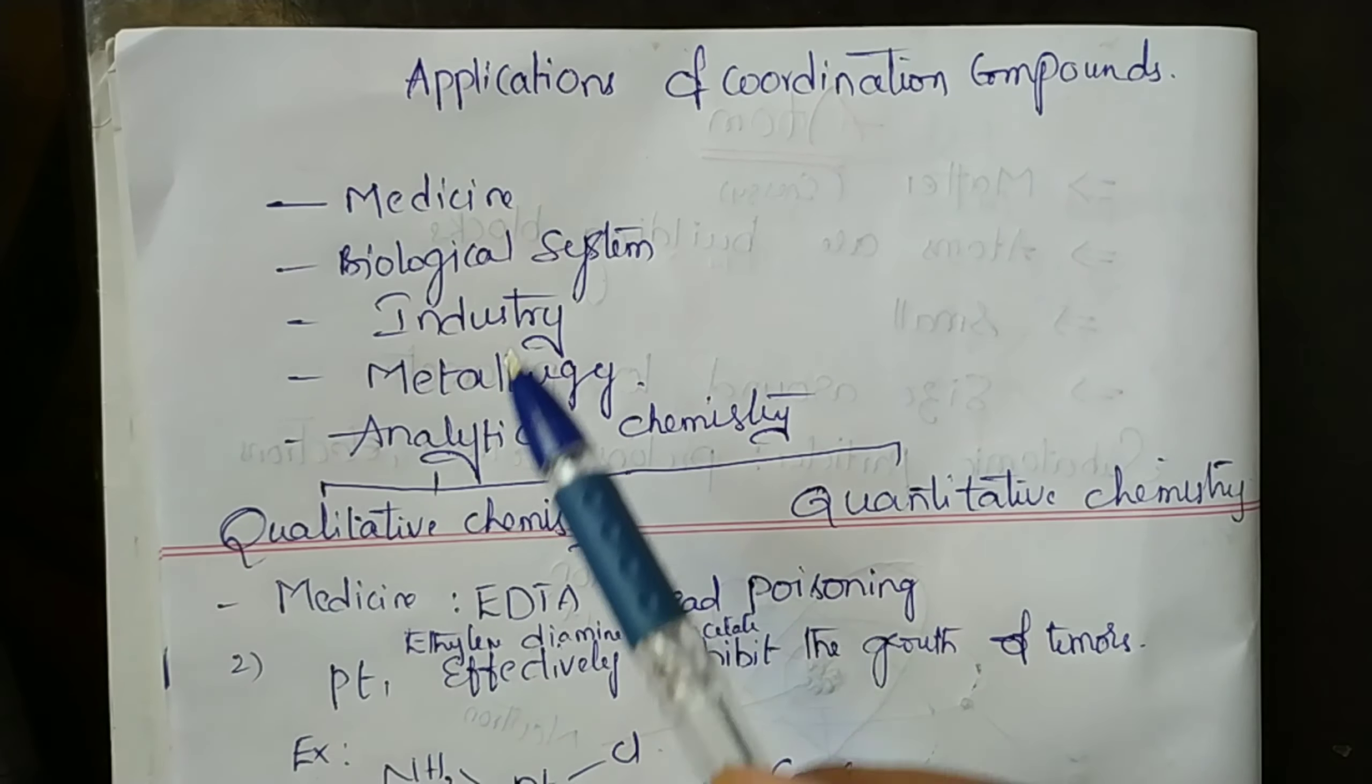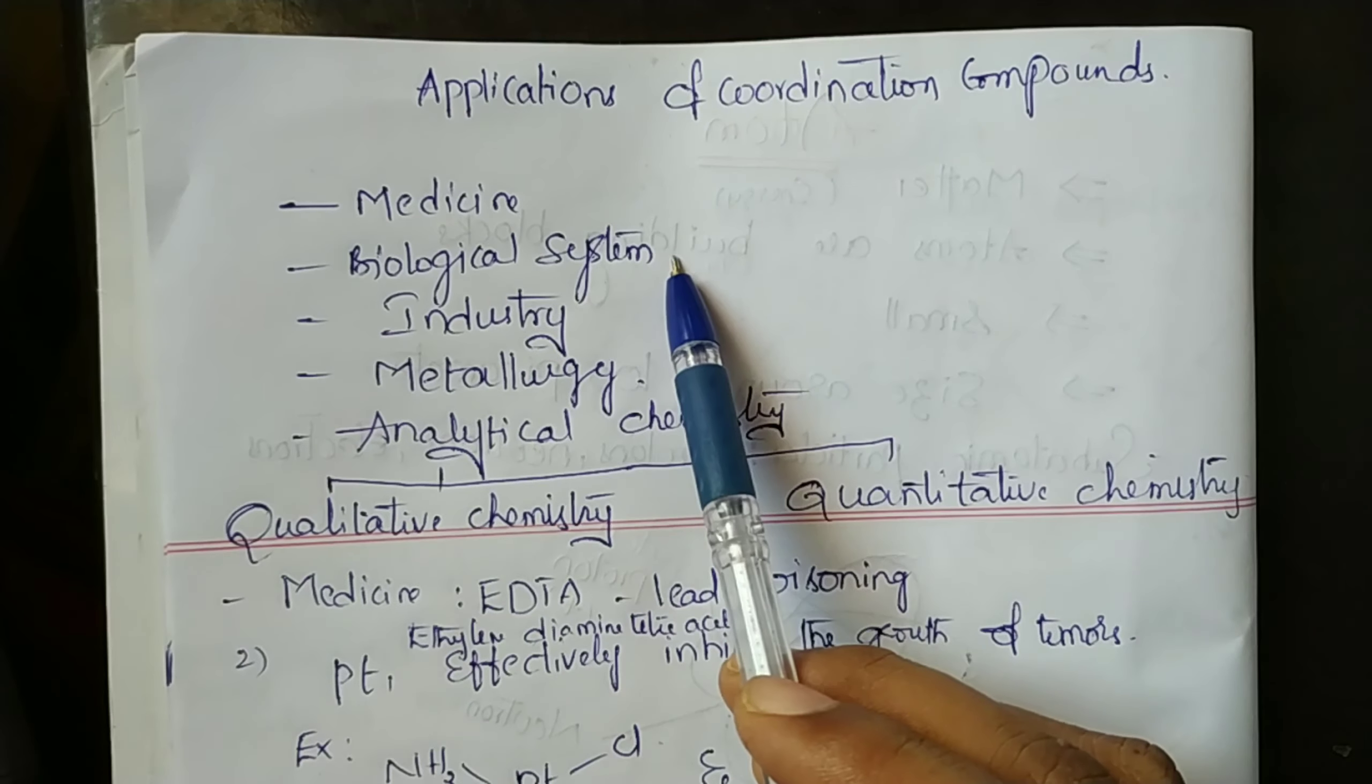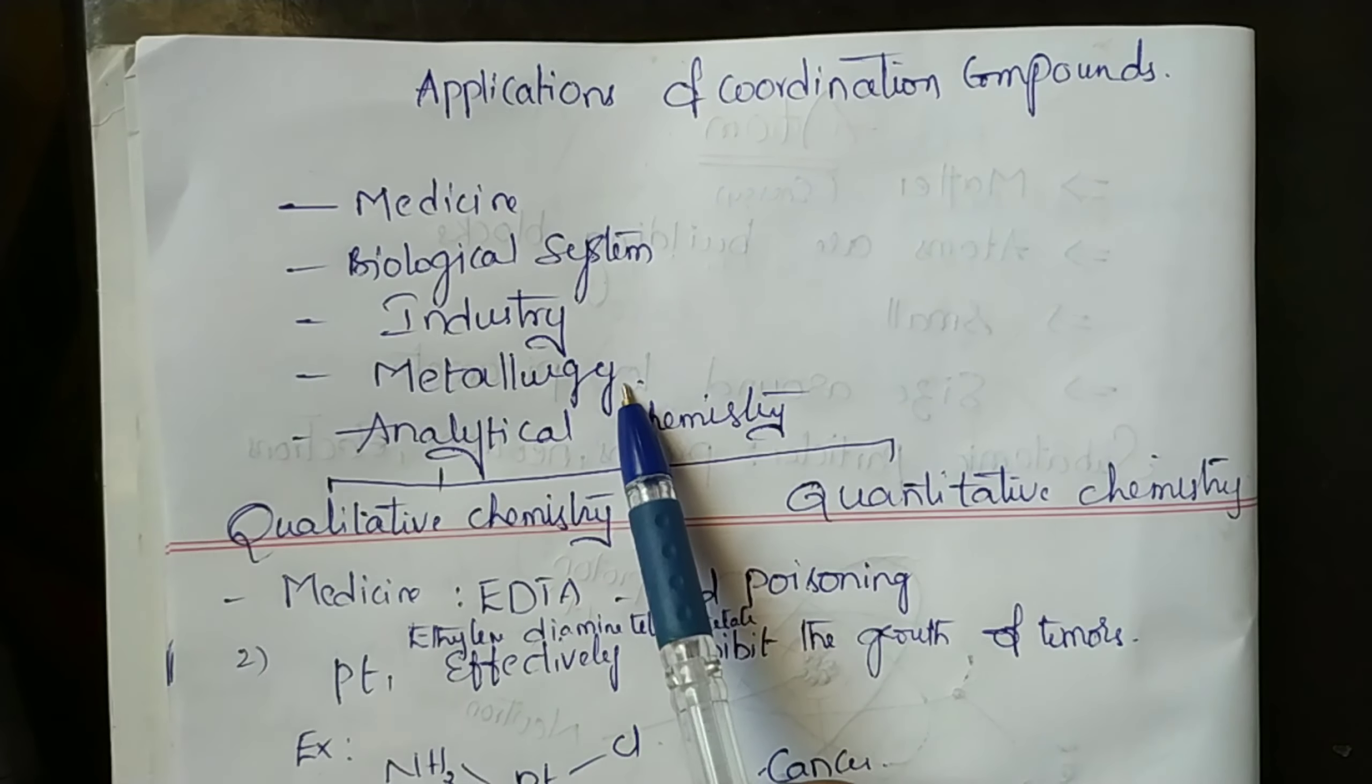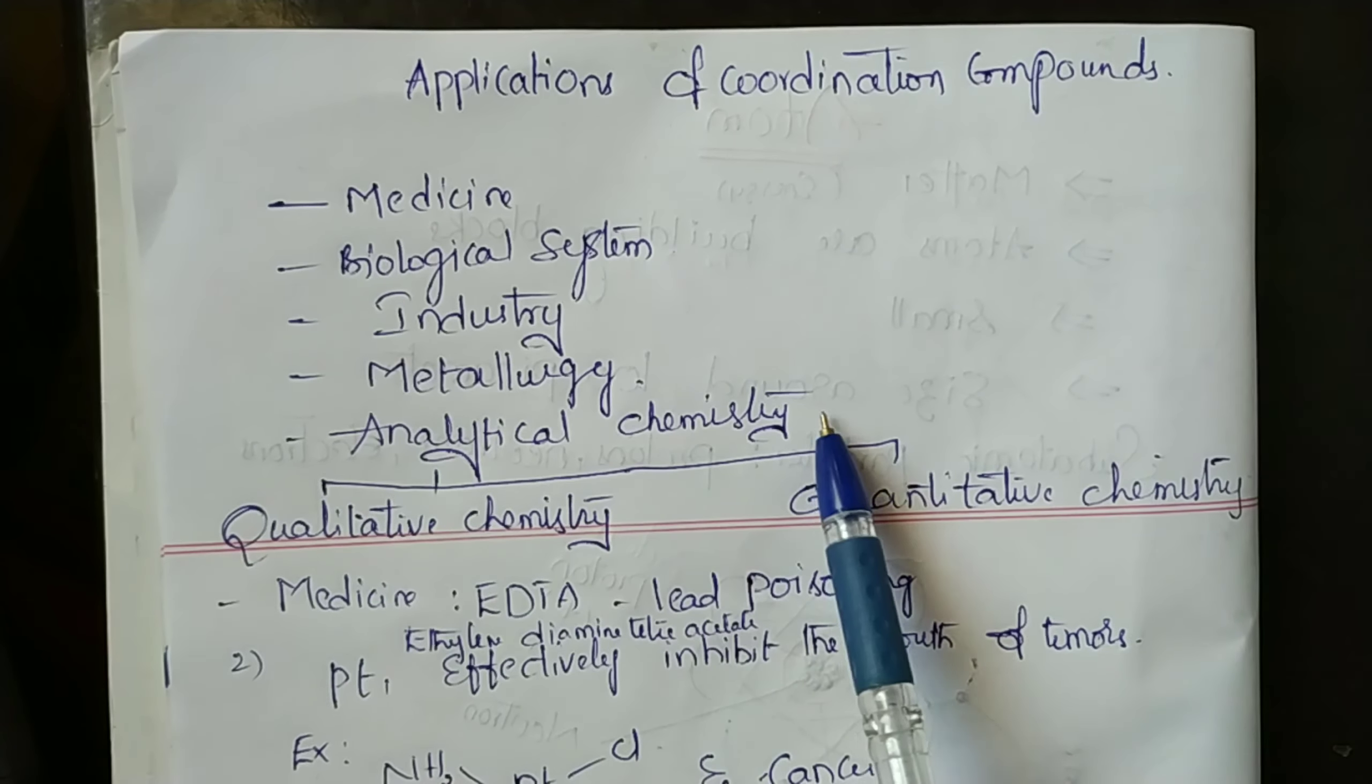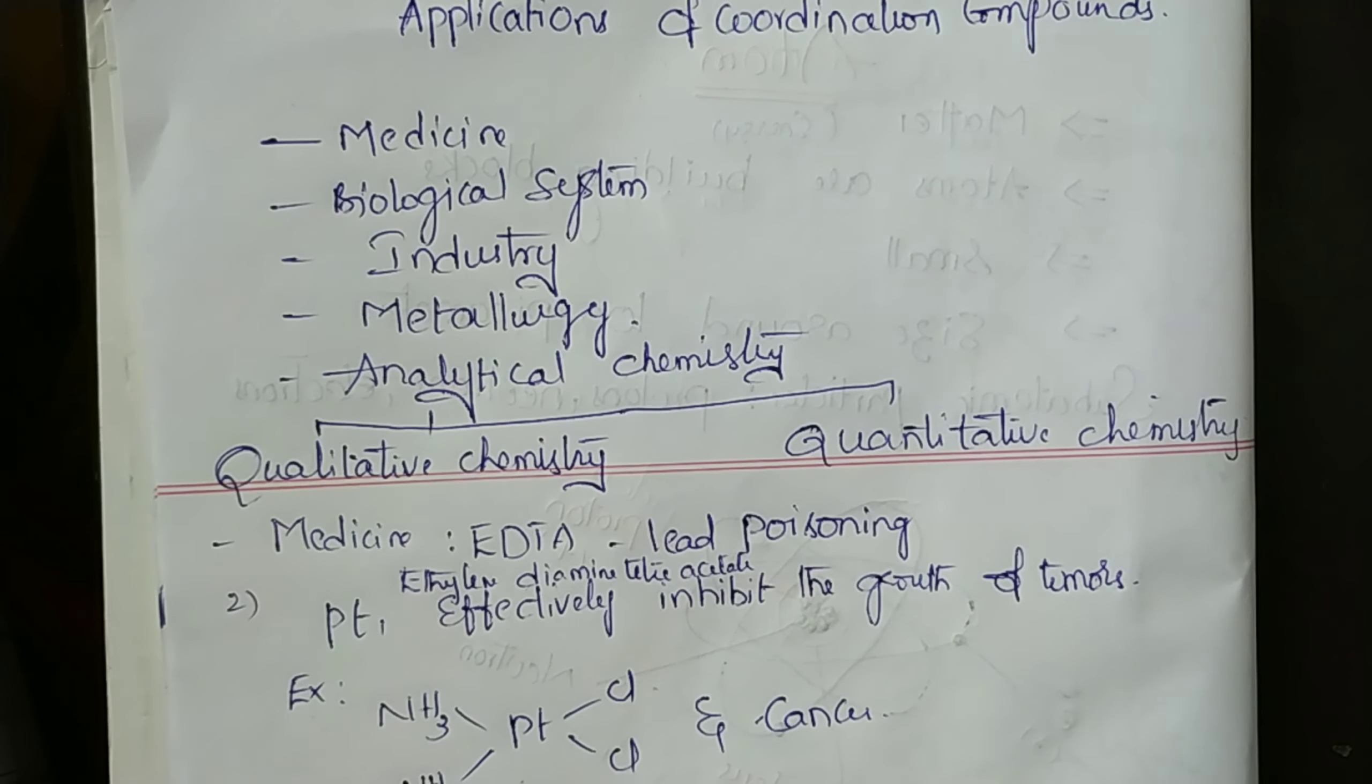Coordination compounds are used in the following industries: medicine, biological systems, industry, metallurgy, and analytical chemistry, both qualitative and quantitative chemistry.